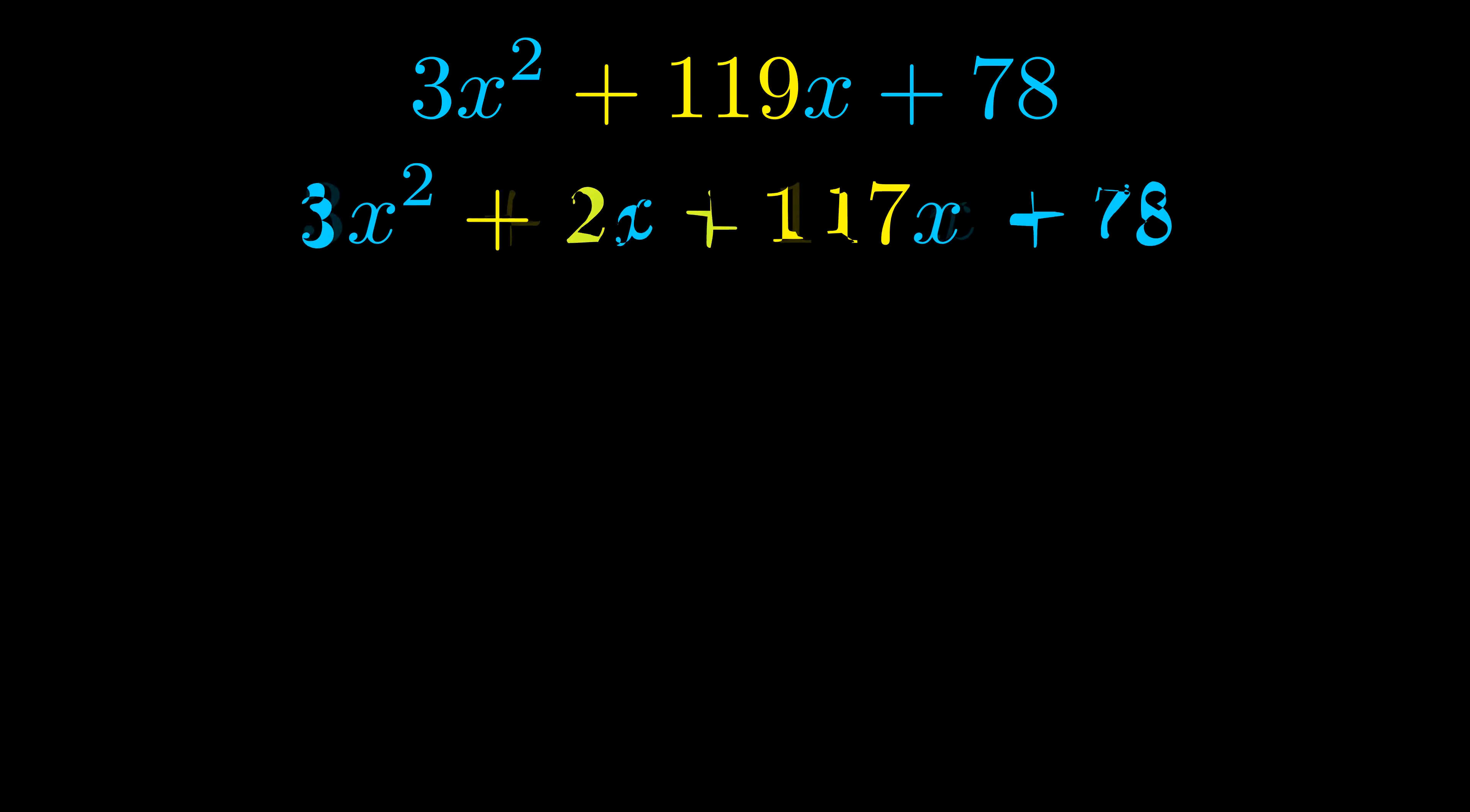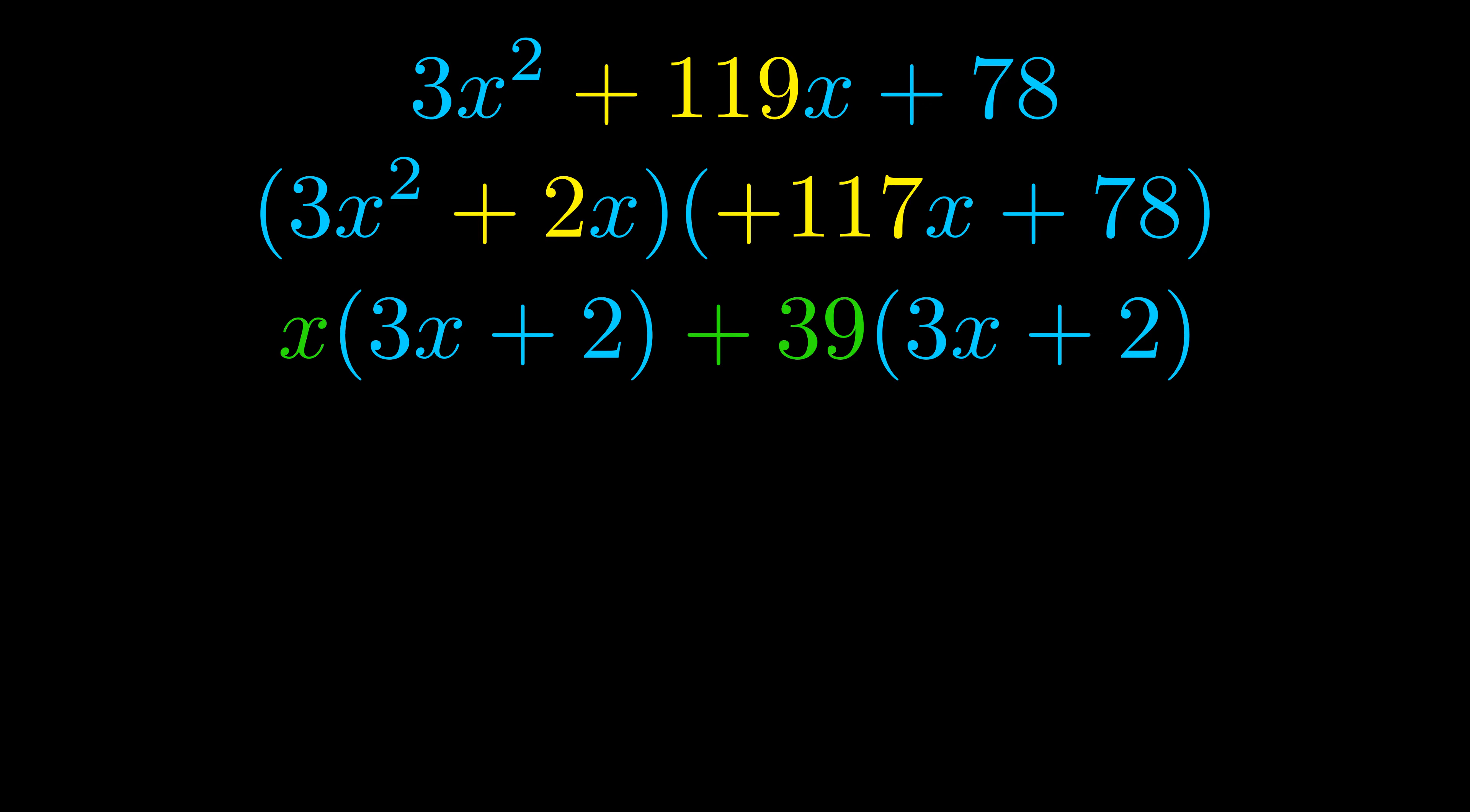Once we've done this we go ahead and we put parentheses around the first term and the last term and we do that so that we can take the greatest common factor out of both terms. We can see the greatest common factor is now outside in green.